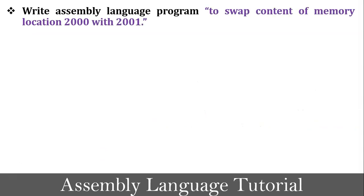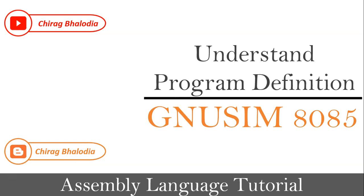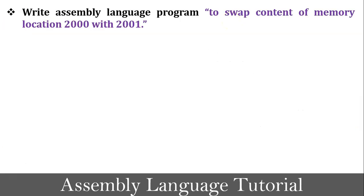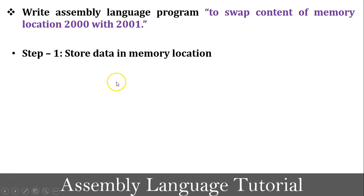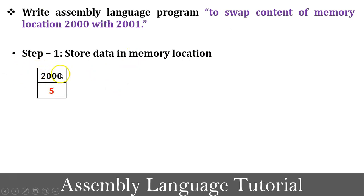The program definition is: write an assembly language program to swap the content of memory location 2000 with 2001. To understand this, in the first step we store data into the memory locations — for example, value 5 is stored into memory location 2000 and value 6 is stored into memory location 2001. Then we write and execute the code.